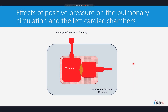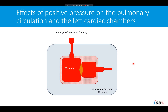In order to understand the effects of positive pressure ventilation on the pulmonary circulation and the left cardiac chambers, we have a diagram depicting the heart inside the thoracic cavity. We have here the left ventricle, the left atrium, pulmonary veins, and aorta.